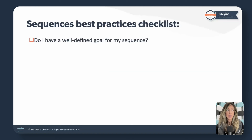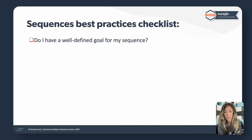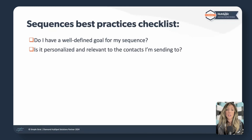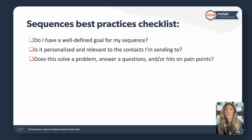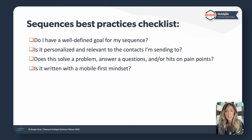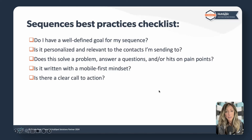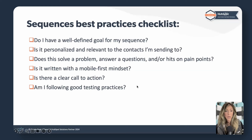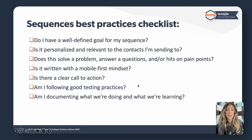Here's your best practices checklist for setting up sequences — you can screenshot this. Do I have a well-defined goal for this sequence? Is it personalized and relevant? Does the content solve a problem, answer a question, or hit on pain points? Is it written with a mobile-first mindset? Is there a clear call to action? Am I following good testing practices? And am I documenting what we're doing and what we're learning?